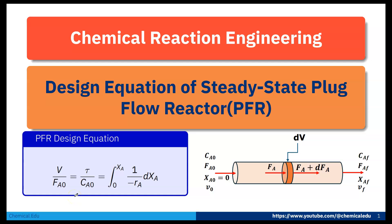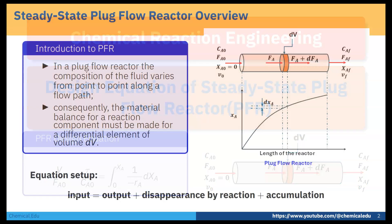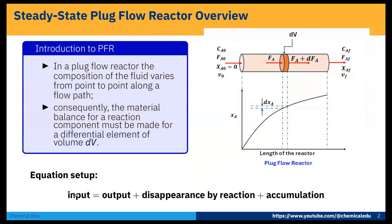Today I will talk about the design equation of steady state plug flow reactor. In a plug flow reactor, the composition of the fluid varies from point to point along the flow path. Now here is the plug flow reactor and reactant is flowing through it, and the composition of the reactant will vary from point to point along the flow path.